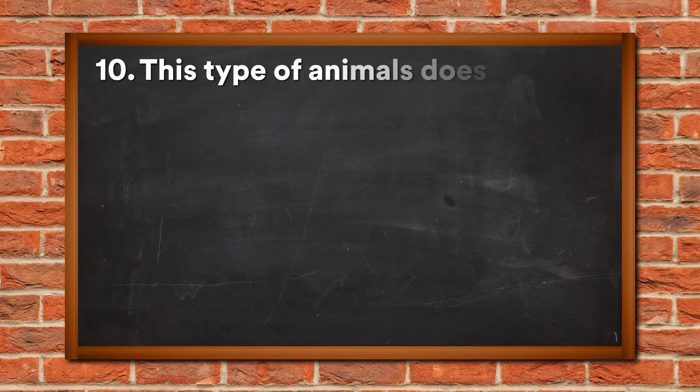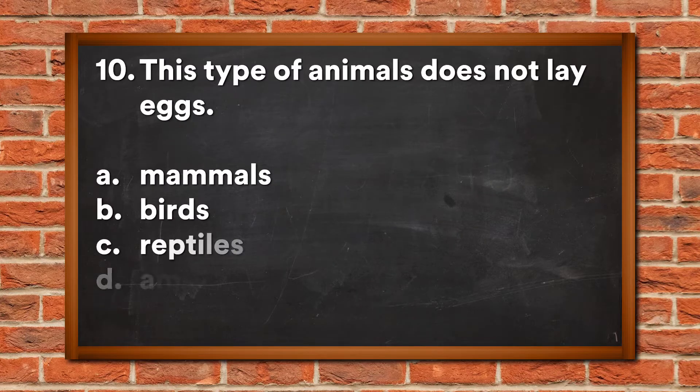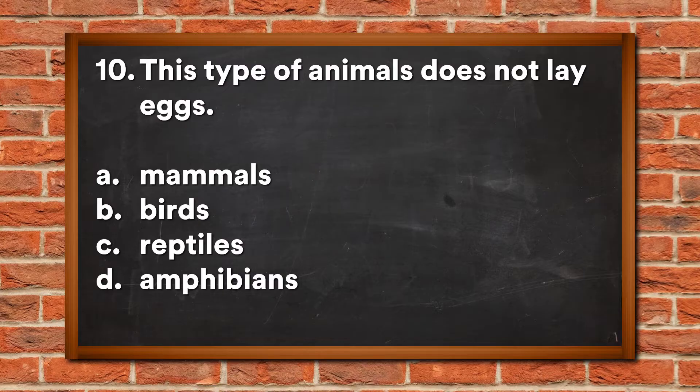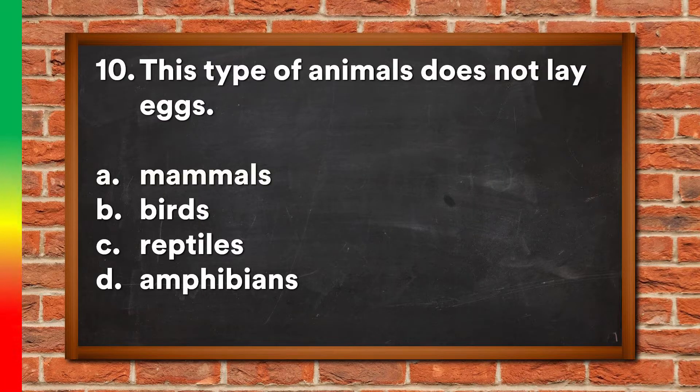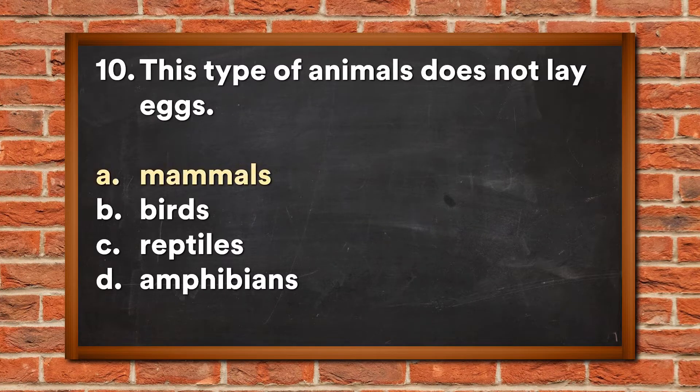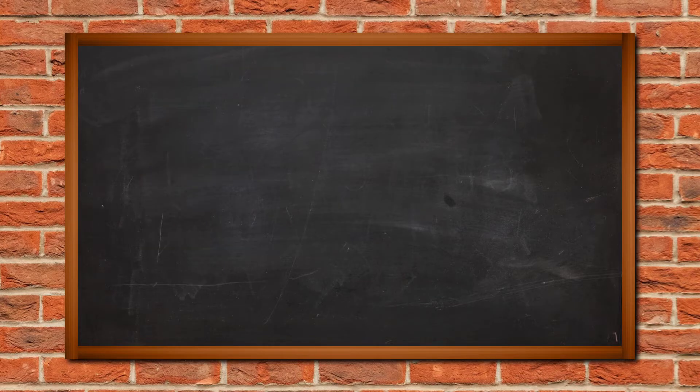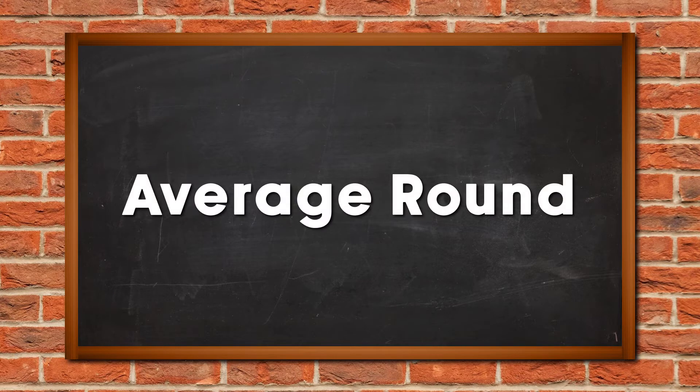Question 10: This type of animal does not lay eggs. A. Mammals, B. Birds, C. Reptiles, D. Amphibians. The answer is A, Mammals. Let's continue to the average round.